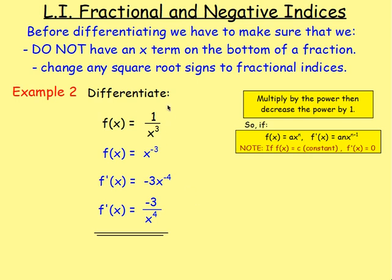Remember, you cannot differentiate if you have x in the bottom of a fraction, and you have to change any square root signs to fractional indices. For example, if you have 1 over x cubed, you would first rewrite that as x to the power of negative 3. Because x is in the bottom of a fraction, you cannot differentiate straight away. And make sure on the left you don't write f dash x — we're just rewriting it before we differentiate.